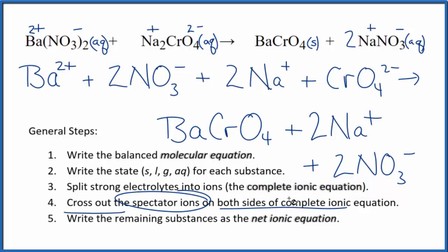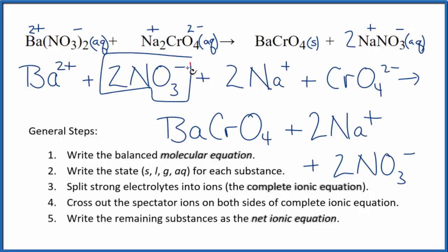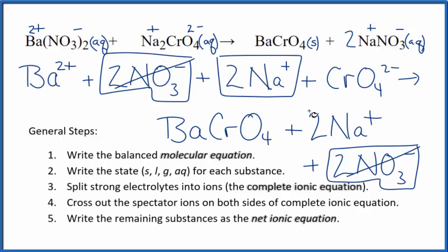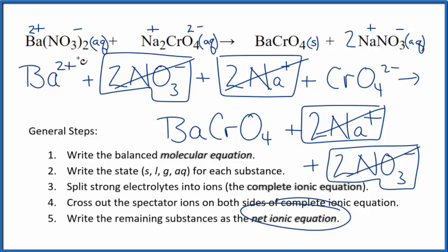Now we can cross out spectator ions — those that appear on both sides of the complete ionic equation. We have two nitrate ions in the reactants and in the products, so those are spectator ions — cross those out. We also have two sodium ions on each side — spectator ions, cross them out. What's left is the net ionic equation for Ba(NO₃)₂ plus Na₂CrO₄.